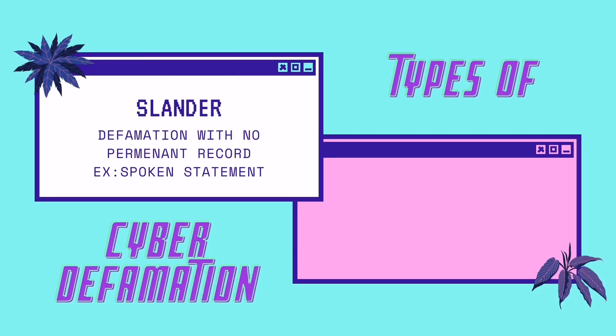There are two types of cyber defamation. The first one is Slander. Slander is a defamation with no permanent record, such as a spoken statement.